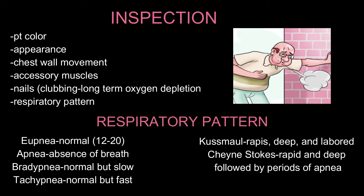During inspection, you're going to look at the patient's color — are they pale, are they yellow? You're also going to look at their appearance: are they sweating, are they trying to catch their breath? You're going to look at the chest wall movement — is it rising and falling like it should? Is it equal and symmetrical? You're also going to look if they're using their accessory muscles, which is abnormal. Another sign is their nails — clubbing of the nails means they have long-term oxygen depletion. And last but not least, you're going to check the respiratory pattern.